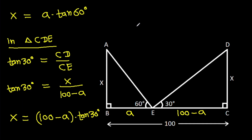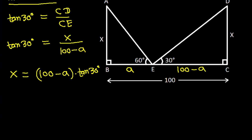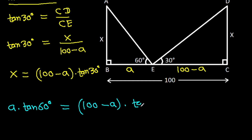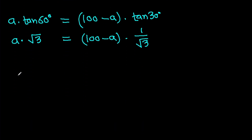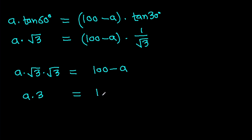And we have x is A times tan 60 degrees, and x is 100 minus A times tan 30 degrees. So A times tan 60 degrees equals 100 minus A times tan 30 degrees. That gives A times root 3 equals 100 minus A times 1 over root 3.